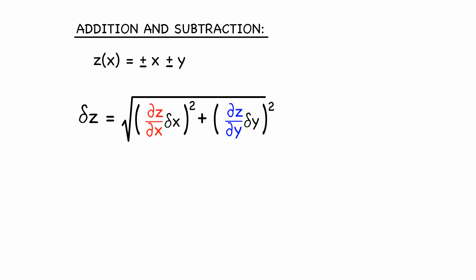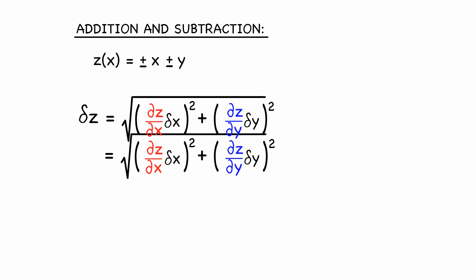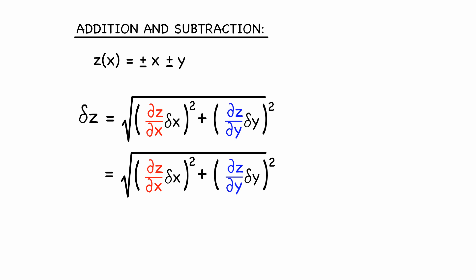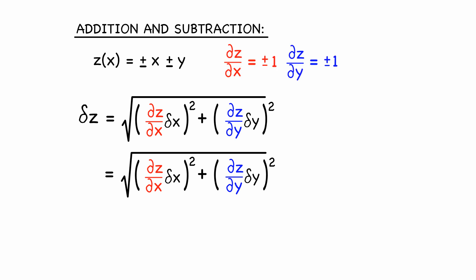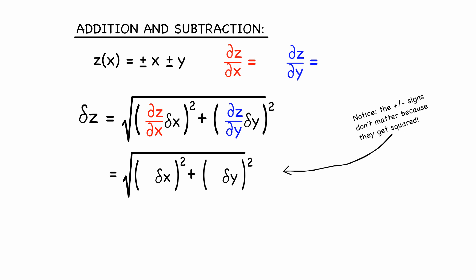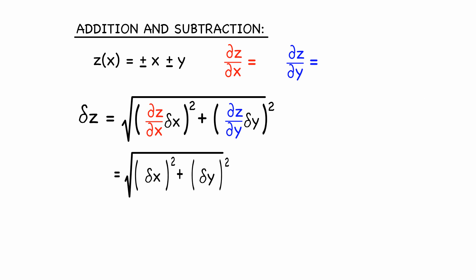Addition and subtraction. When you construct the uncertainty on the sum or difference of two variables, you'll notice that both the derivatives are really easy — they are one. The formula reduces to the two original uncertainties added in quadrature.